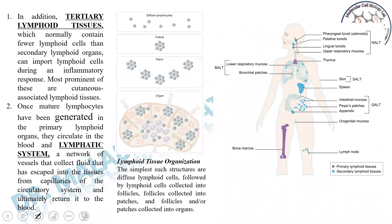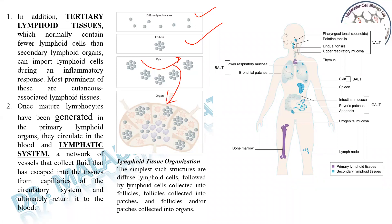Coming to the structural organization of the lymphoid tissue, you can see that there are diffuse lymphocytes. The lymphocytes are present in the form of follicles. The follicles are collected into patches, and the patches are collected into organs. This is the organization of the lymphocytes and the lymphatic system.